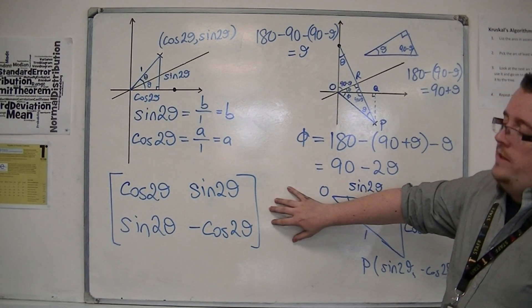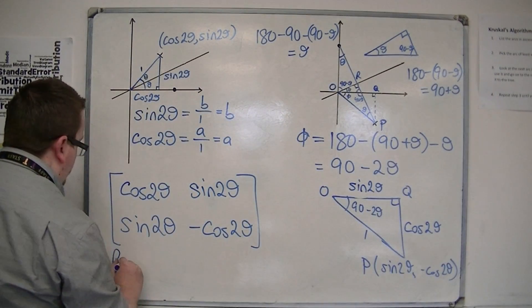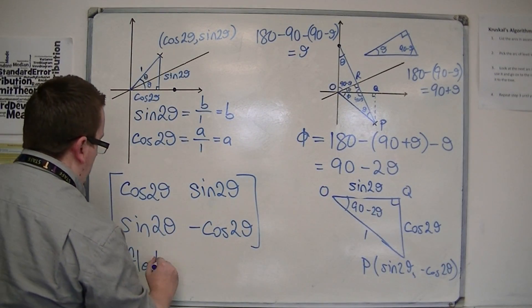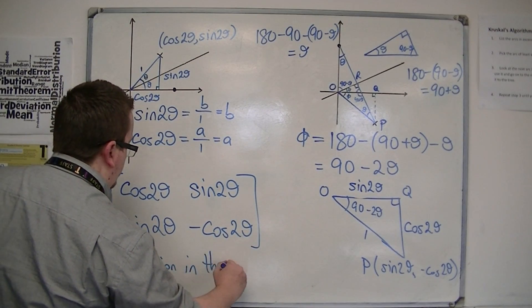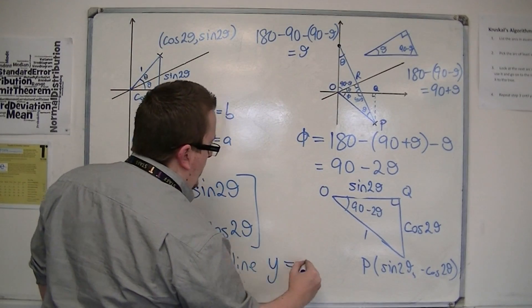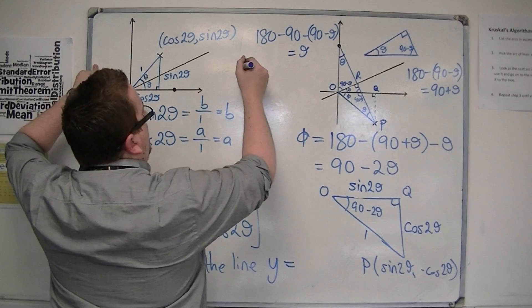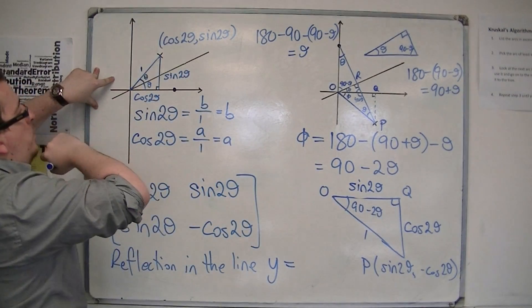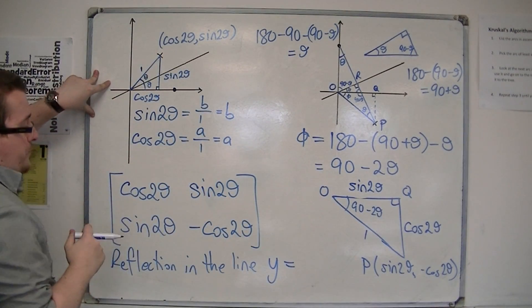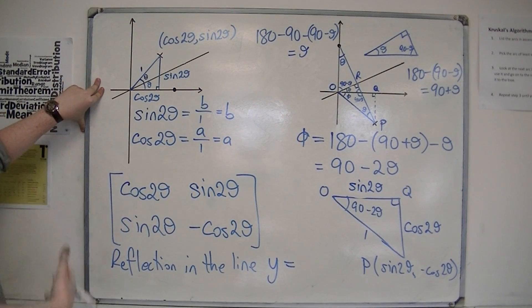But that is the matrix that gives you a reflection in the line, well, what is the line? It's y is equal to, now if that's theta, then what we're actually looking at is a reflection in the line y equals tan theta x.